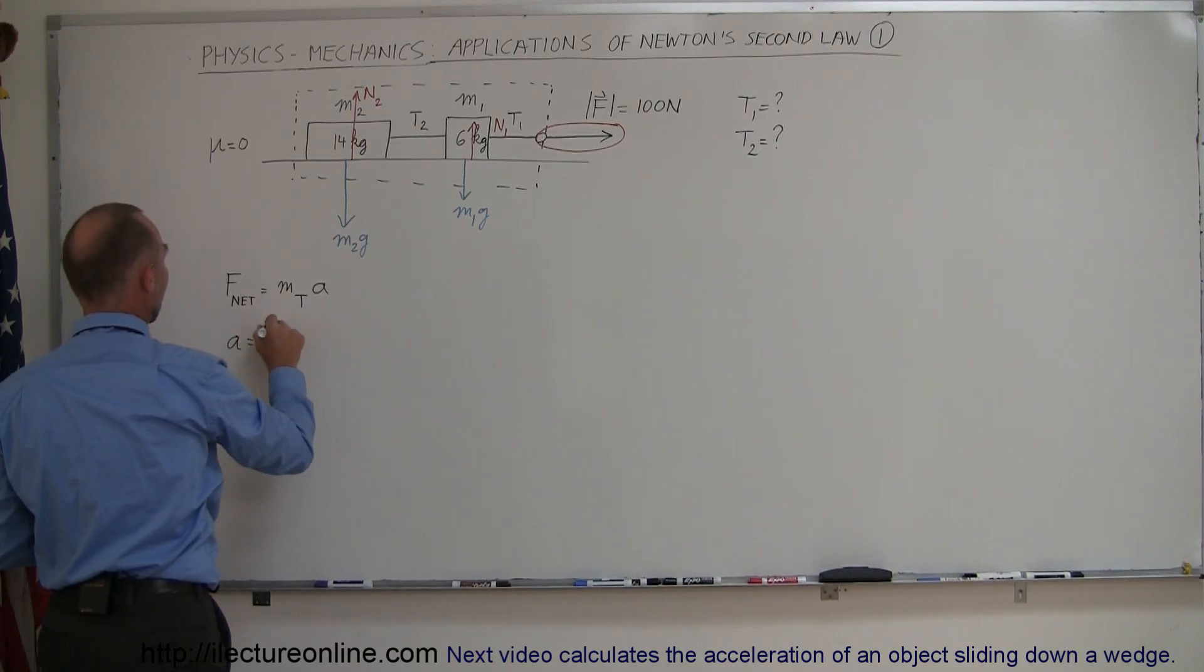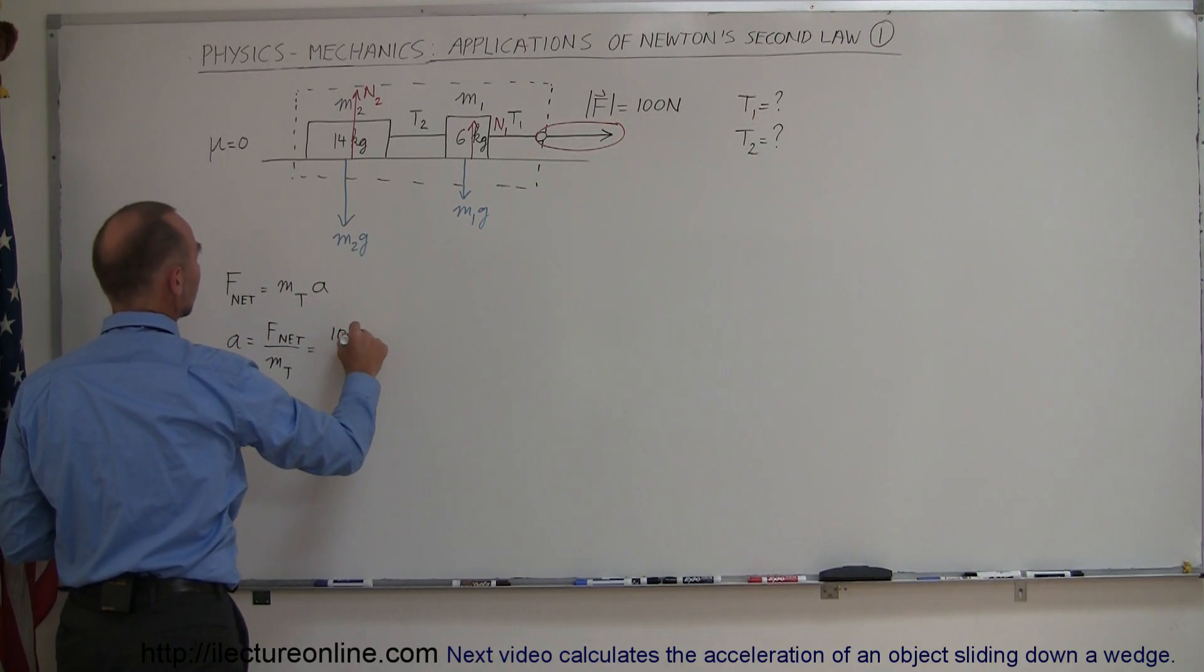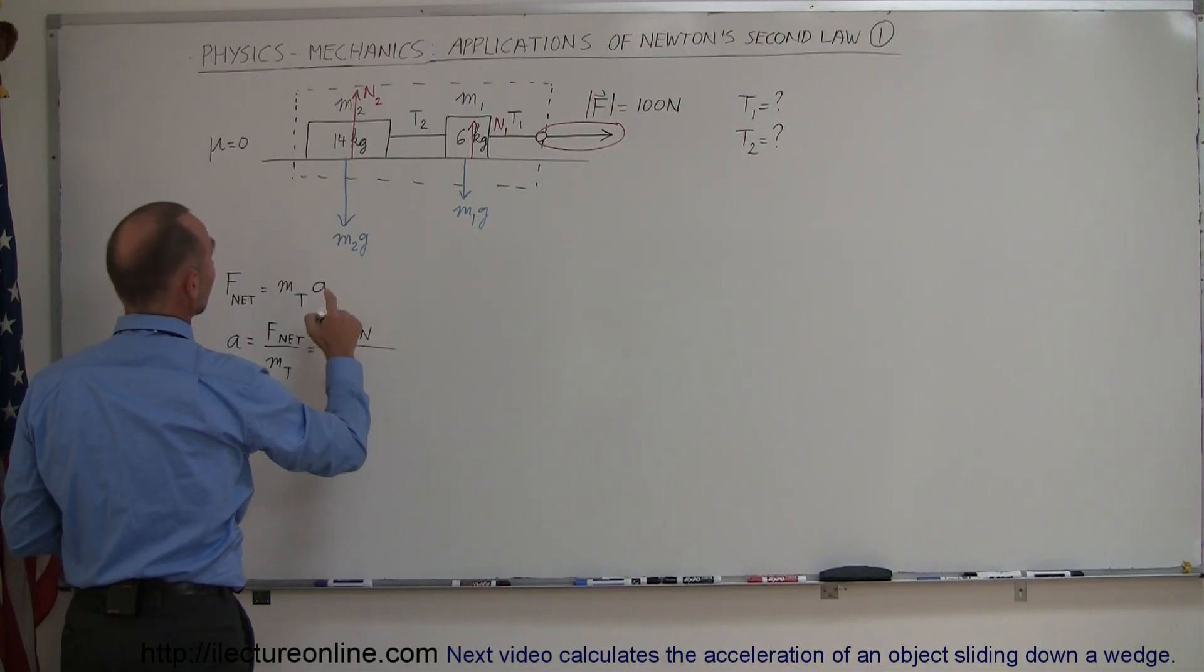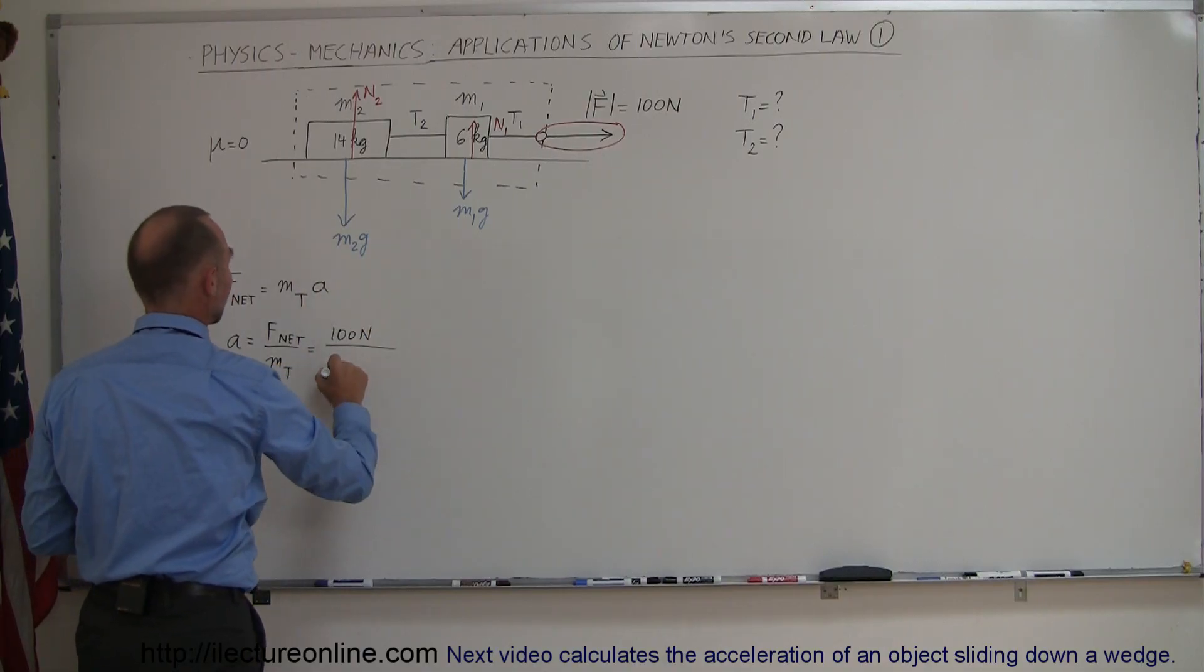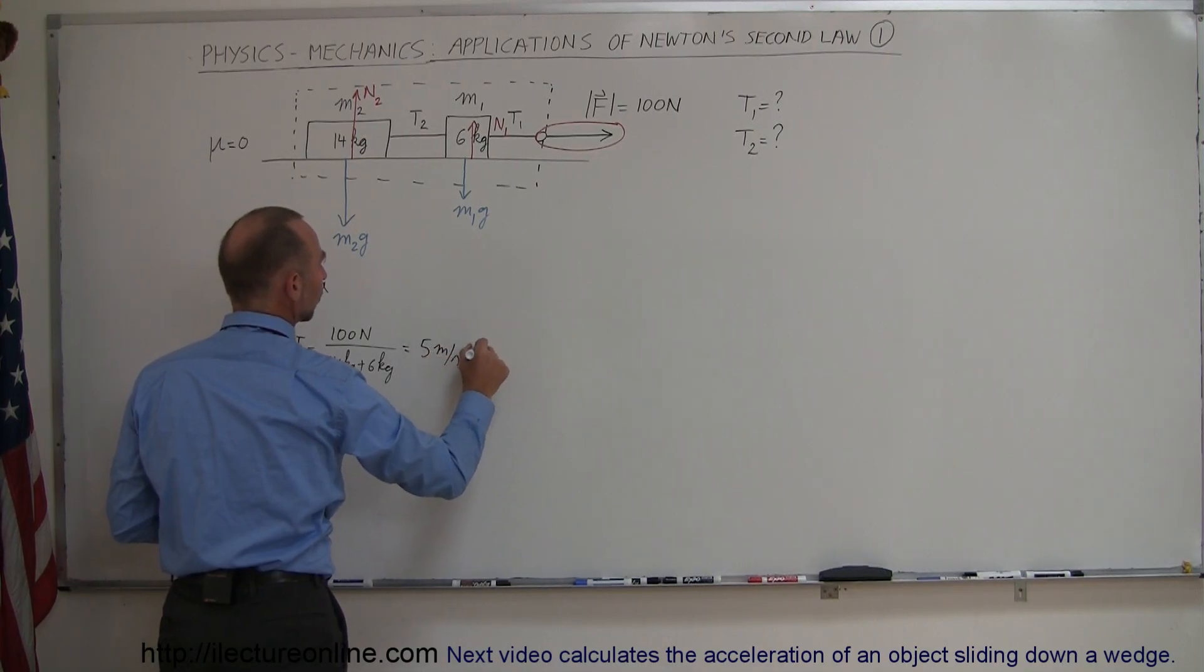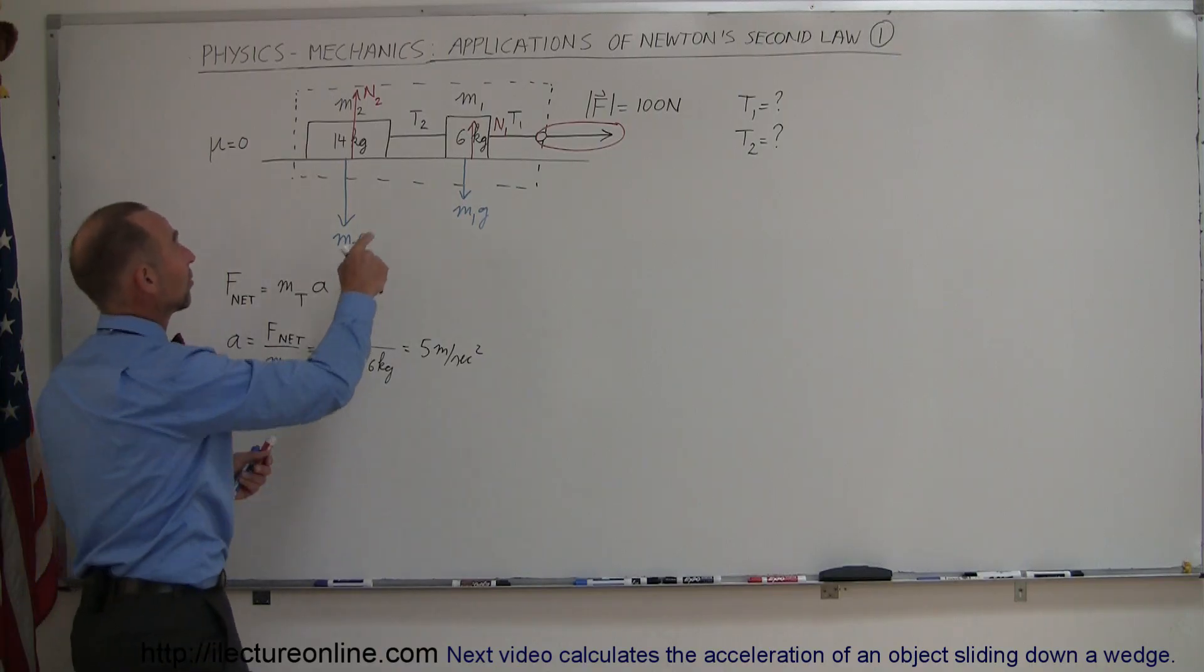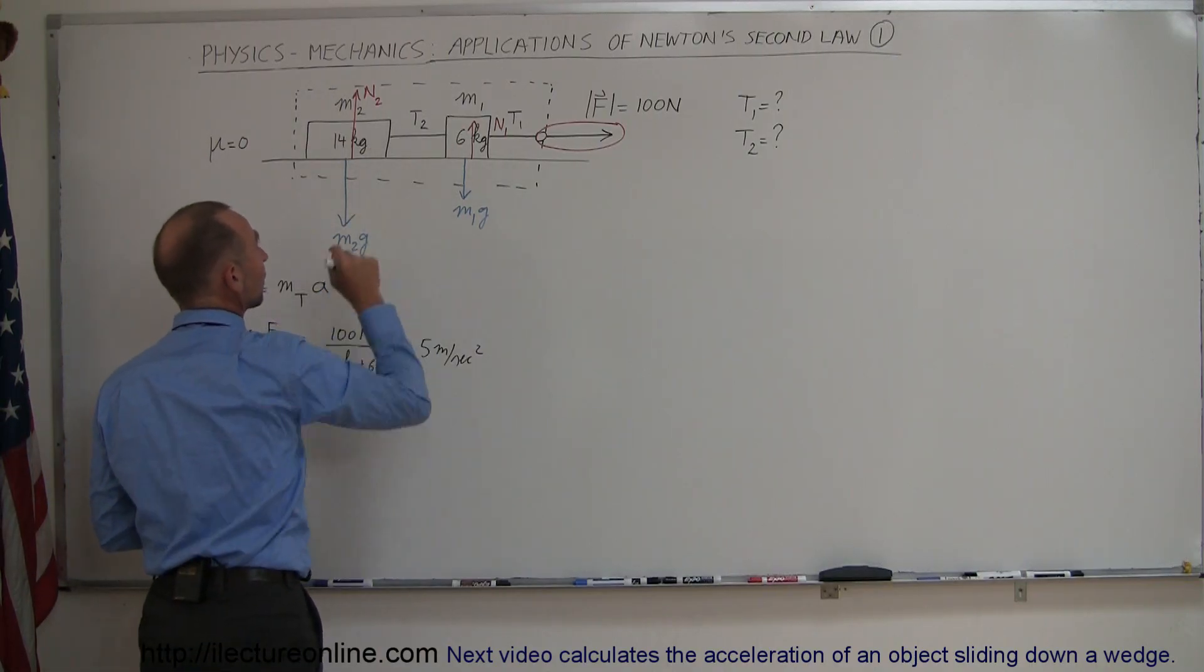We can start by saying that F net in the x direction equals mass total times acceleration. The acceleration equals F net divided by the mass total, which is 100 Newtons divided by the sum of the two masses, which would be 14 kilograms plus 6 kilograms. That's 100 divided by 20, or 5 meters per second squared. Now we know the acceleration of this system, which is also the acceleration of the individual masses.